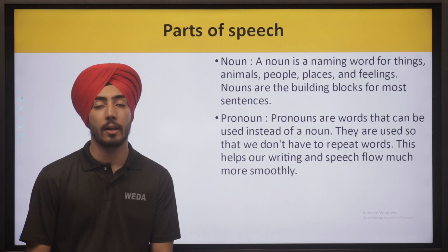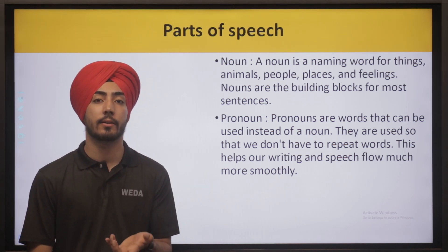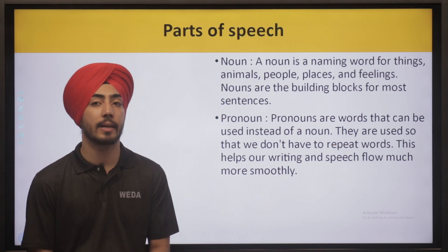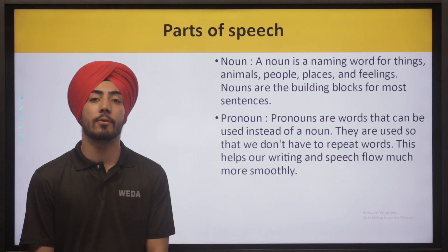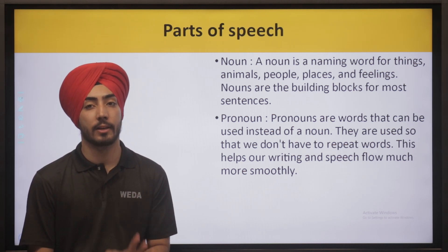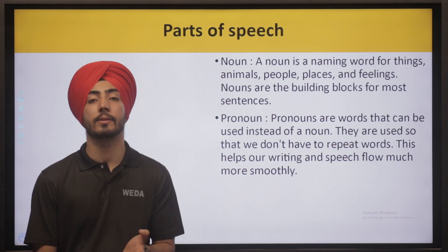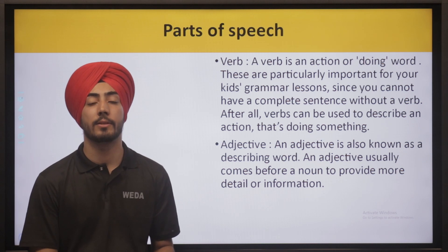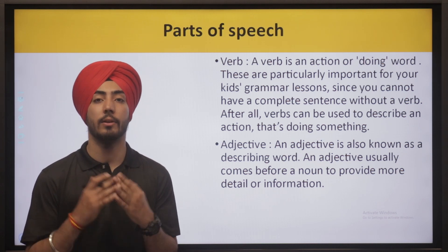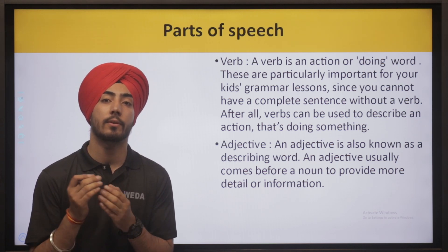Now we will see each of these parts of speech in a little detail. Noun is the naming of things — animals, people, places, feelings; these are all things we need to be careful about. Pronouns — whether it is he, she, or it — you have to take care of them and try to avoid using them again and again. We cannot use nouns every time, so we use pronouns in their place. Verb is what activity is going on, what are you doing — that has to be taken care of. This is particularly important for your grammar.